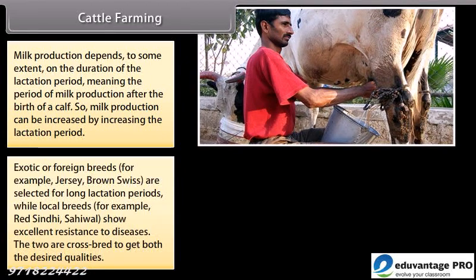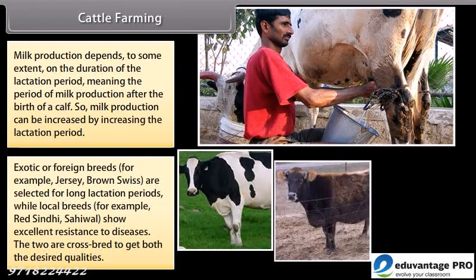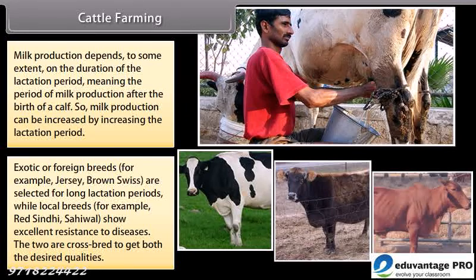Exotic or foreign breeds, for example Jersey and Brown Swiss, are selected for long lactation periods, while local breeds, for example Red Sindhi and Sahiwal, show excellent resistance to diseases. The two are cross-bred to get both the desired qualities.